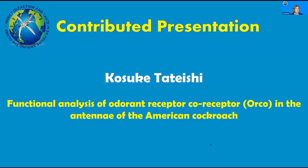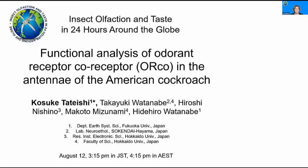We will move on to the next talk. Our next speaker is Kosuke Tateishi, a PhD student in Fukuoka University in Japan, who will also talk about the American cockroach. Thank you. I studied the function of Orco in the American cockroach. Insects detect volatile odorants using two distinct types of olfactory receptors: odorant receptors (OR) and ionotropic receptors (IR). The OR forms heteromeric channels composed of a ligand-specific binding receptor protein ORx and its coreceptor protein Orco. An Orco mutant could not detect odorants through OSNs expressing ORs.